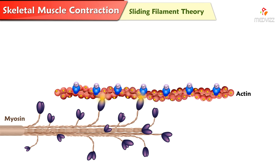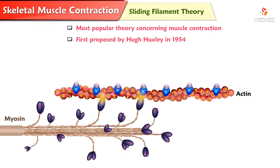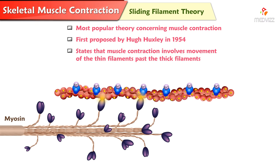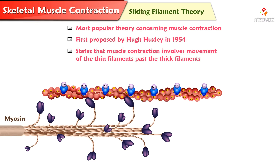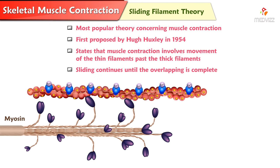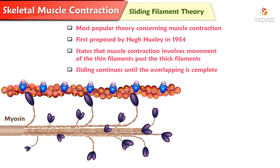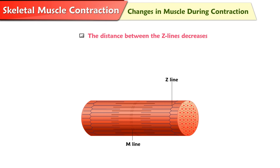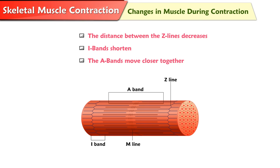Sliding filament theory is the most popular theory concerning muscle contraction. It was first proposed by Hugh Huxley in 1954. It states that muscle contraction involves sliding movement of the thin filaments past the thick filaments. Sliding continues until the overlapping of the thin and thick filaments is complete. The changes in muscle during contraction are: the distance between the Z-lines of the sarcomeres decreases, the I-bands shorten, and the A-bands move closer together but do not diminish in length.